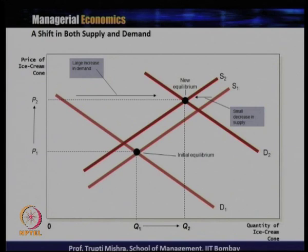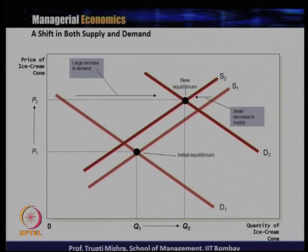Initially, the demand curve is D1, supply curve is S1, the equilibrium quantity is Q1 and equilibrium price is P1. On the y-axis we are considering the price of ice cream cone, and on the x-axis we are considering the quantity of ice cream cone.